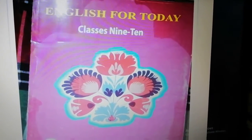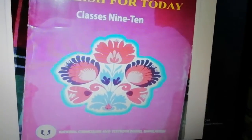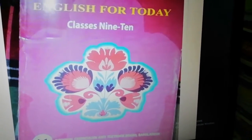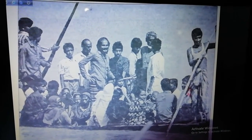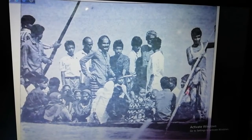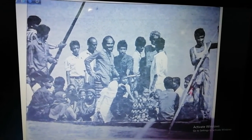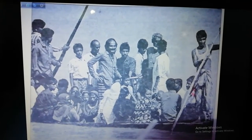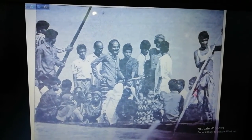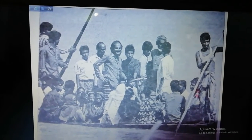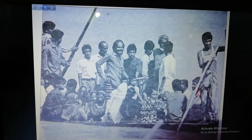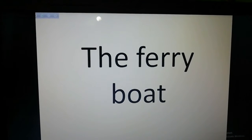Okay, students. This is English for today for class 9-10. So open your book. Look at the picture. What can you see in this picture? What are they doing? We are seeing here some people are crossing maybe a river or canal. So our today's lesson is the ferry boat.